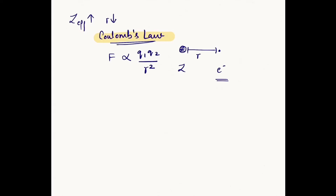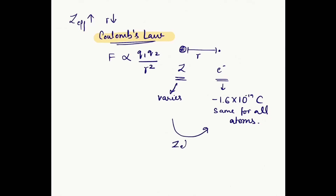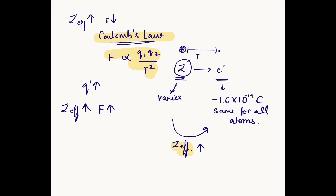The electron's charge is always equal and the same for all atoms, while the nuclear charge varies. What really matters is the effective nuclear charge, because not all the nuclear charge is acting on this electron. As the effective nuclear charge increases, we can see from Coulomb's formula that as Q1 increases, the force between the two charges increases and the radius decreases.